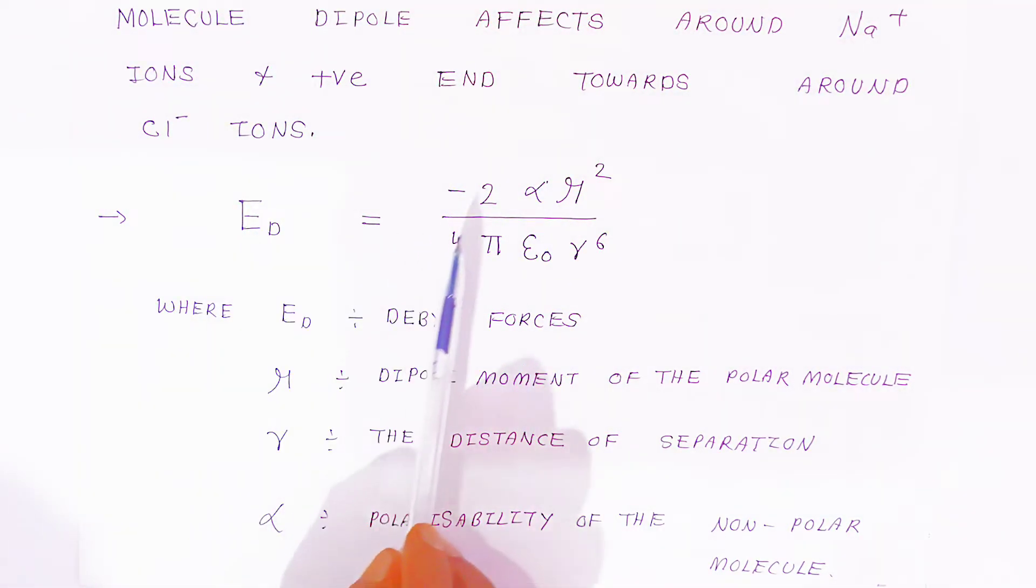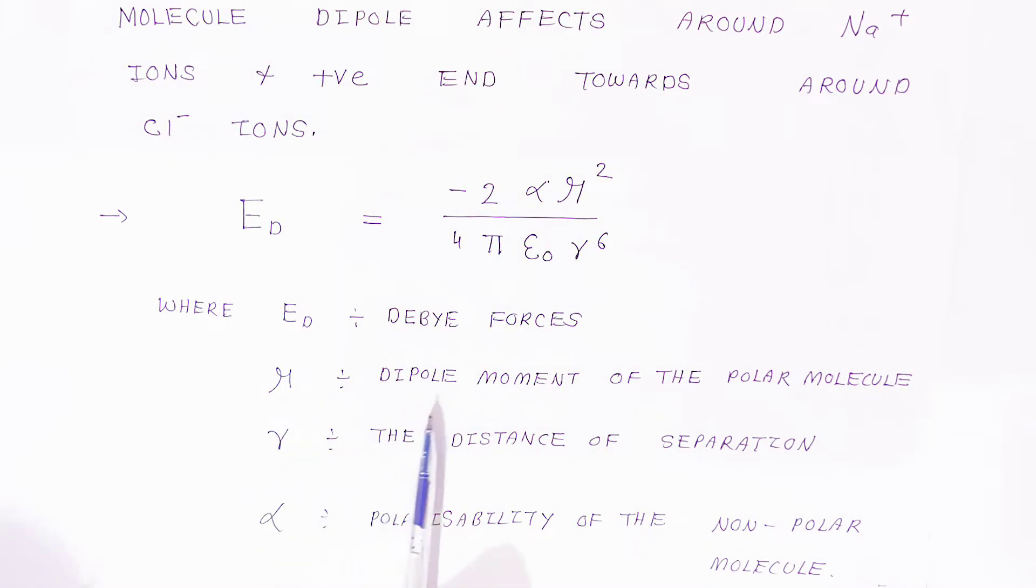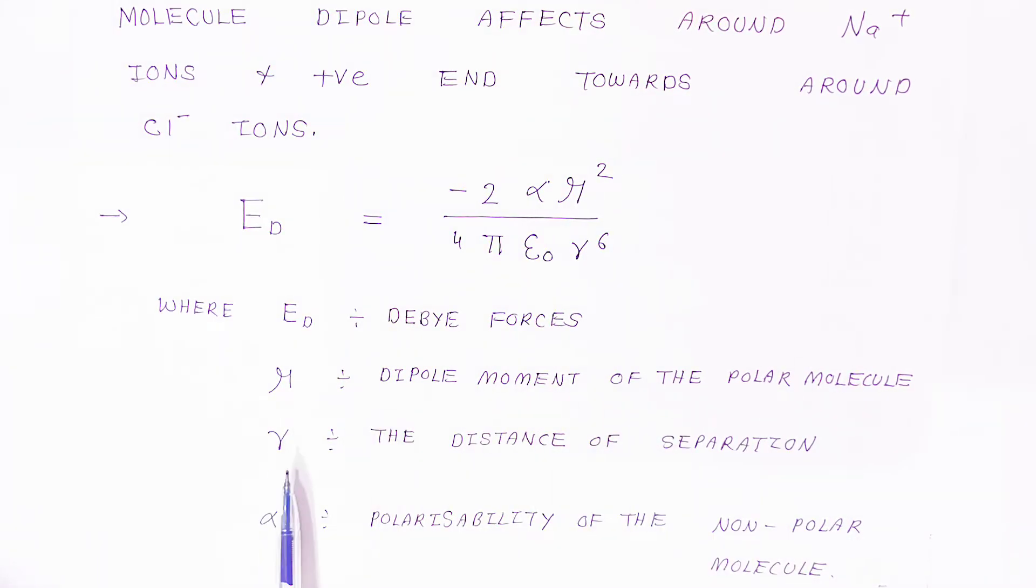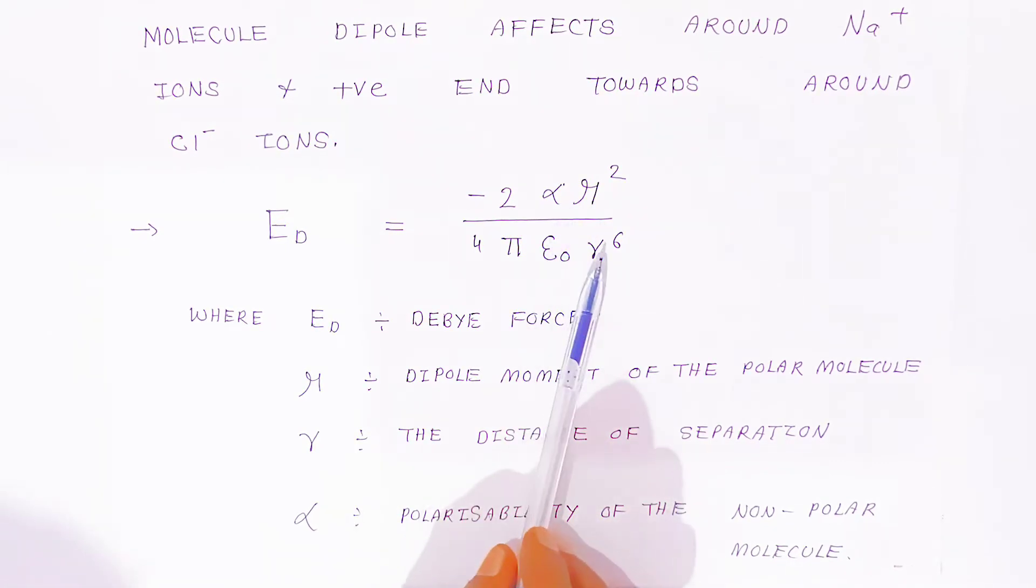Here, E_D = -2αμ^2 / (4π ε_0 γ^6), where E_D is the Debye force, μ is the dipole moment of the polar molecules, γ is the distance of separation, and α is the polarizability of the non-polar molecules.